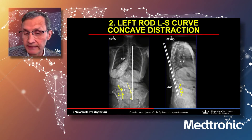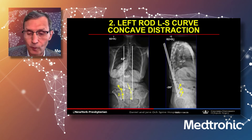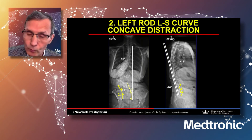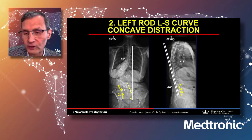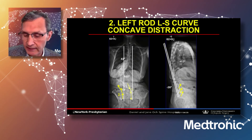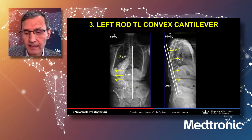I then apply the left-sided rod, distally capturing the S2AI screw, then S1, L6, L5, and L4, and distract on that side. Since the right side is already compressed and locked in, this distraction does not remove lumbosacral lordosis — it further horizontalizes the lower lumbar vertebrae for coronal correction. I'll go back and forth — right-side compression, left-side distraction — until L4, L5, and L6 are well horizontalized in the coronal plane.